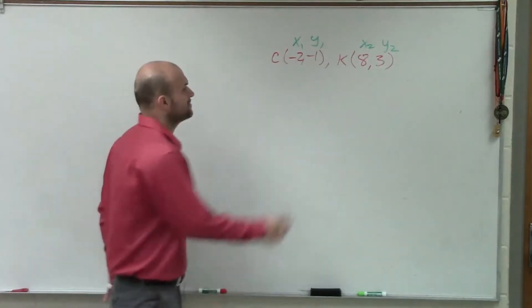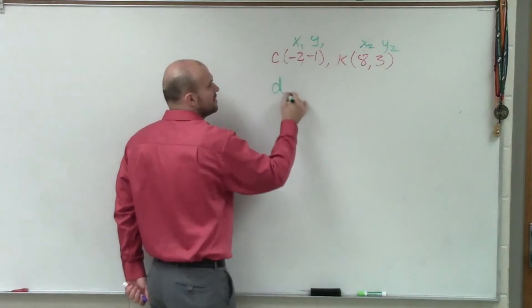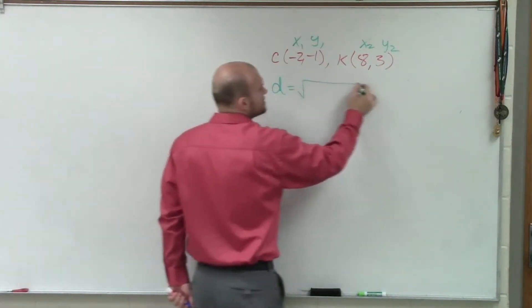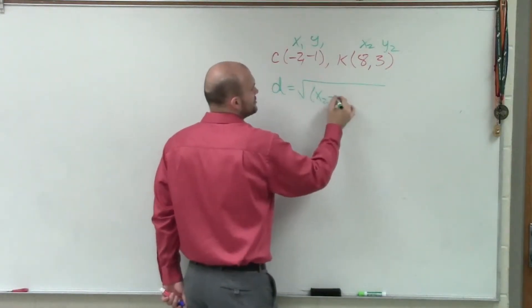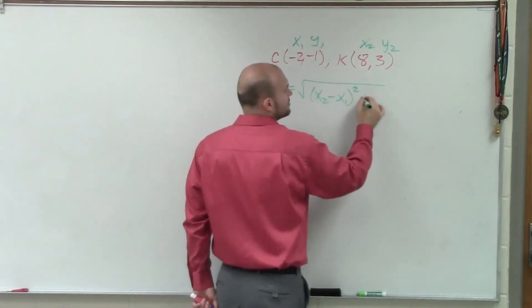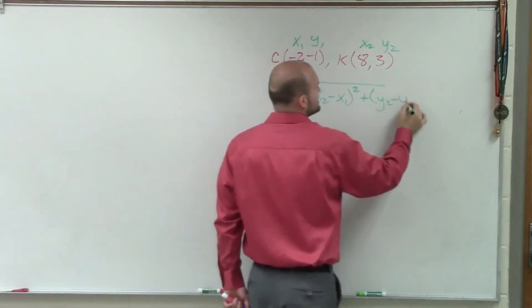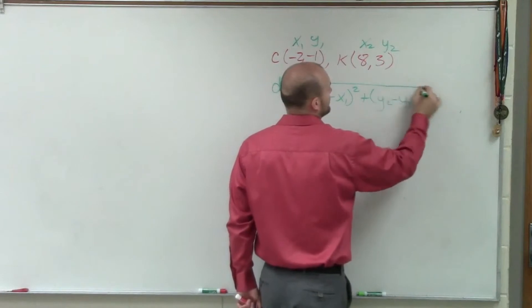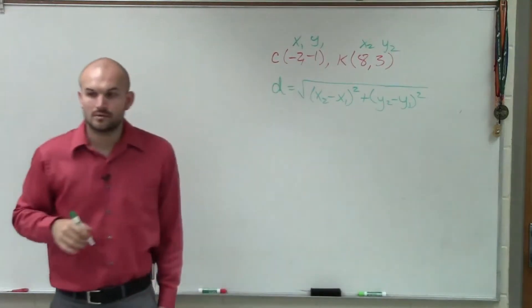The reason why we're going to label them, is because if I'm asking you to find the distance, we talked about the distance formula is the square root of (x2 minus x1) squared plus (y2 minus y1) squared.